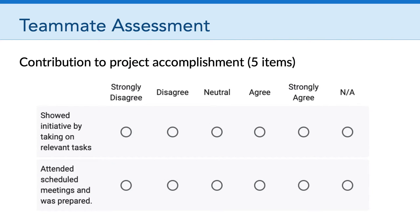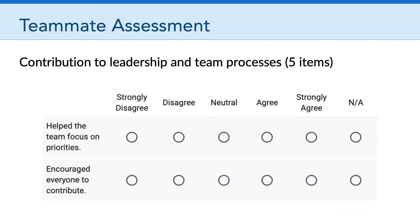The first part of the teammate assessment focuses on contributions to project accomplishments, with items like 'this teammate showed initiative by taking on relevant tasks' or 'this teammate attended scheduled meetings and was prepared.' There is a strongly disagree to strongly agree Likert scale, plus a not applicable option. The second part focuses on contributions to leadership and team processes, with items such as 'this teammate helped the team focus on priorities' and 'this teammate encouraged everyone to contribute.'